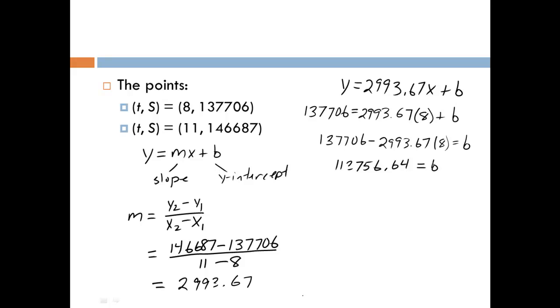So my linear function, S as a function of T, is 2,993.67 times T plus 113,756.64. And this is a linear function that will model the number of students enrolled in the Wake County Public School System T years from the year 2000.